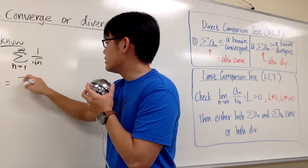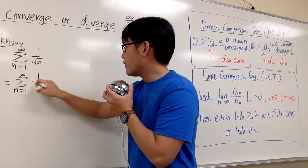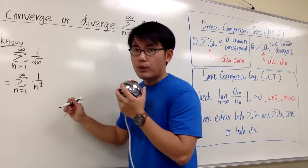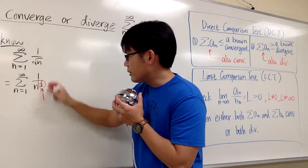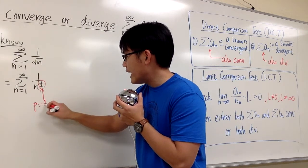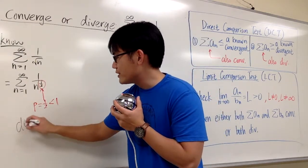And we know this is just the same as sigma when n goes from 1 to infinity, 1 over n to the 1 half power. And this is 1 half power, this is n to the p form, so p is equal to 1 half, and this is less than 1. So we know this series diverges.